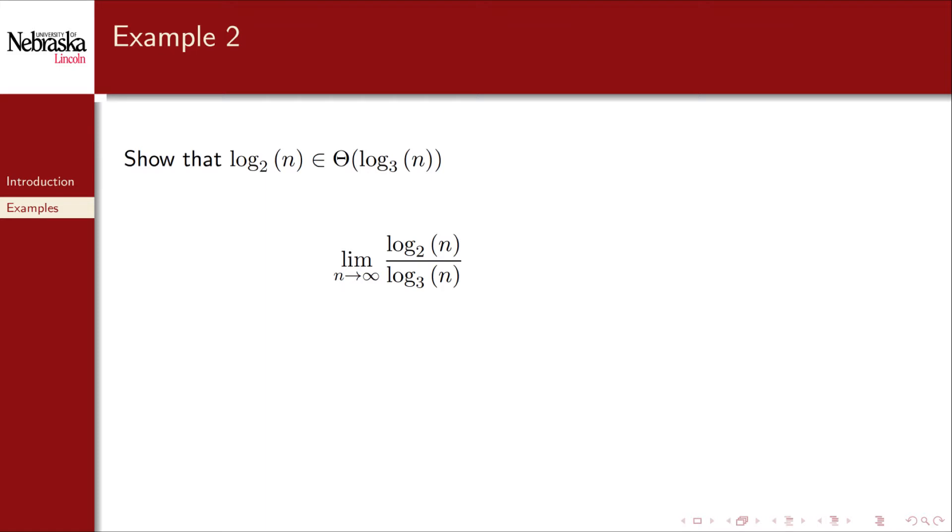Here's the second example that we looked at involving two logarithms. We use the same change of base formula to convert the denominator to log base 2 and simplify. Since the limit does not depend on n, it's simply a constant. And so by the second case, we've shown that log base 2 is Big Theta of log base 3, and by extension vice versa.